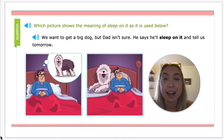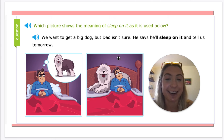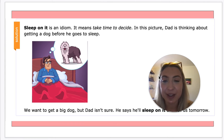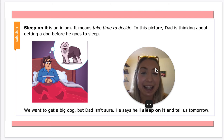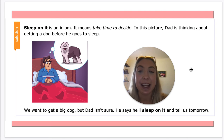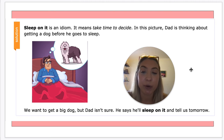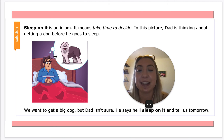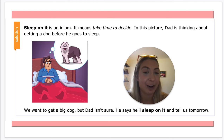The correct picture to represent 'sleep on it' would be this picture — not literally sleeping on the dog, but thinking about it. 'Sleep on it' is an idiom that means to take time to decide. In this picture, dad is thinking about getting a dog before he goes to sleep, and then he will make his decision later. So let's do some more examples.